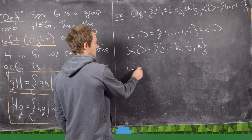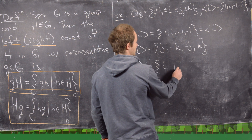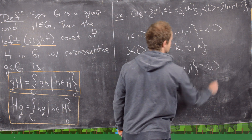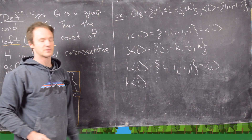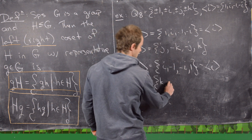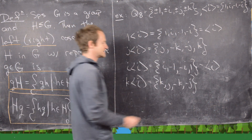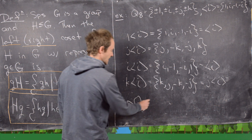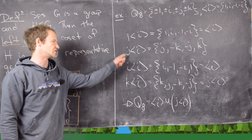Let's do the coset with representative i: multiplying everything in the subgroup by i gives i, -1, -i, and i·(-i)=i²·(-1)... wait — i·1=i, i·i=-1, i·(-1)=-i, i·(-i)=1. That's just the cyclic subgroup again. For the coset with representative k: k·1=k, k·i=j, k·(-1)=-k, k·(-i)=-j, giving {k, j, -k, -j}, which is the same as the coset with representative j. So the quaternions decompose as ⟨i⟩ union the coset j·⟨i⟩.